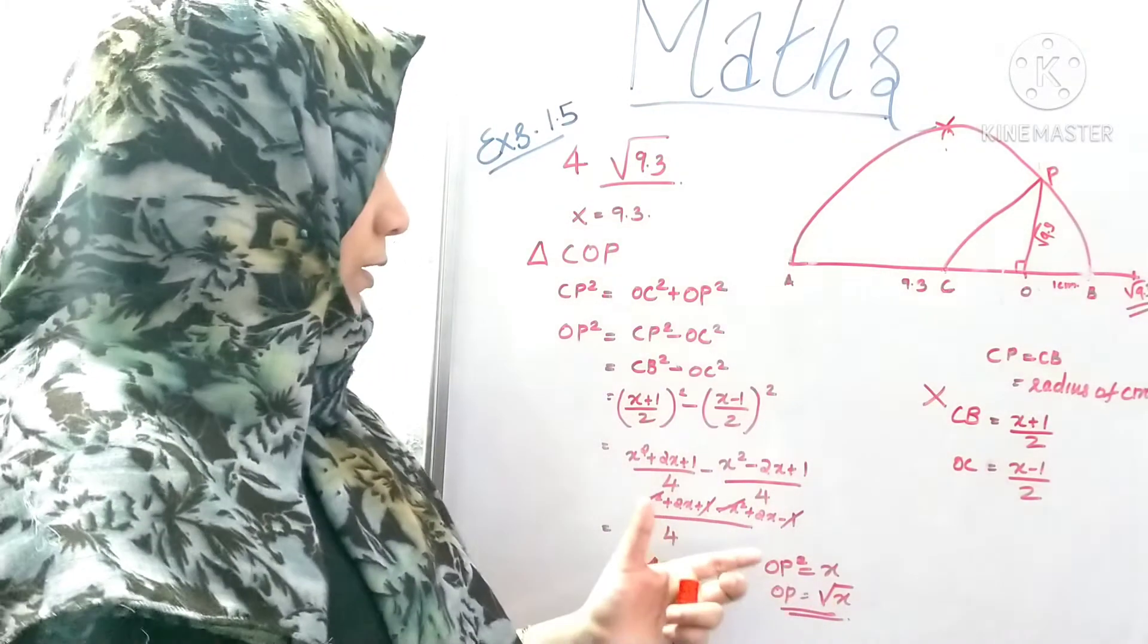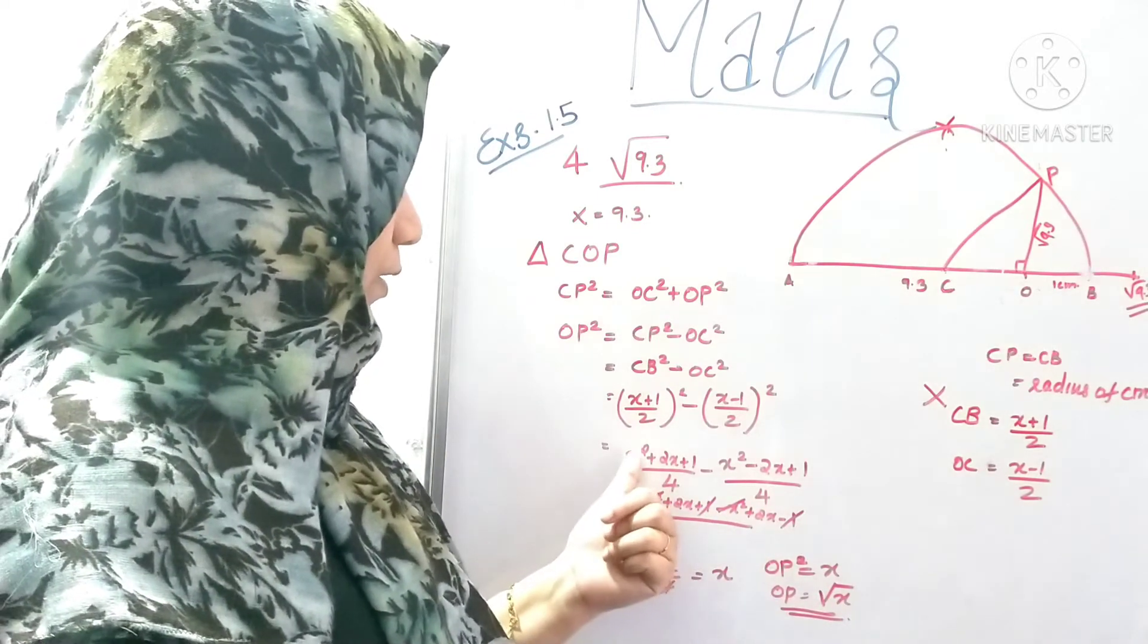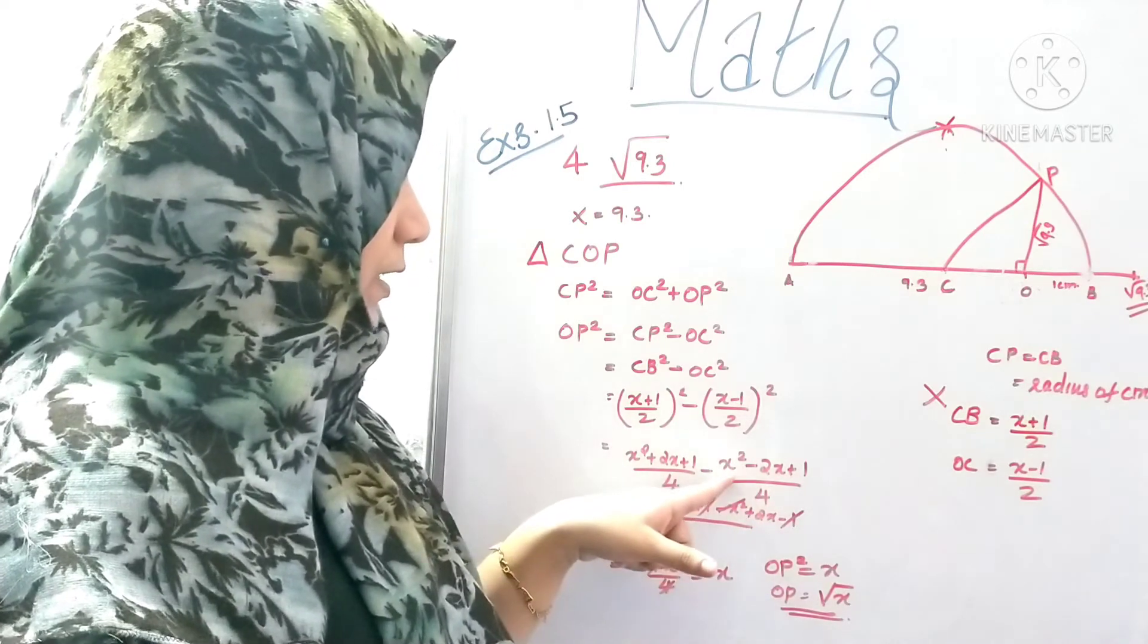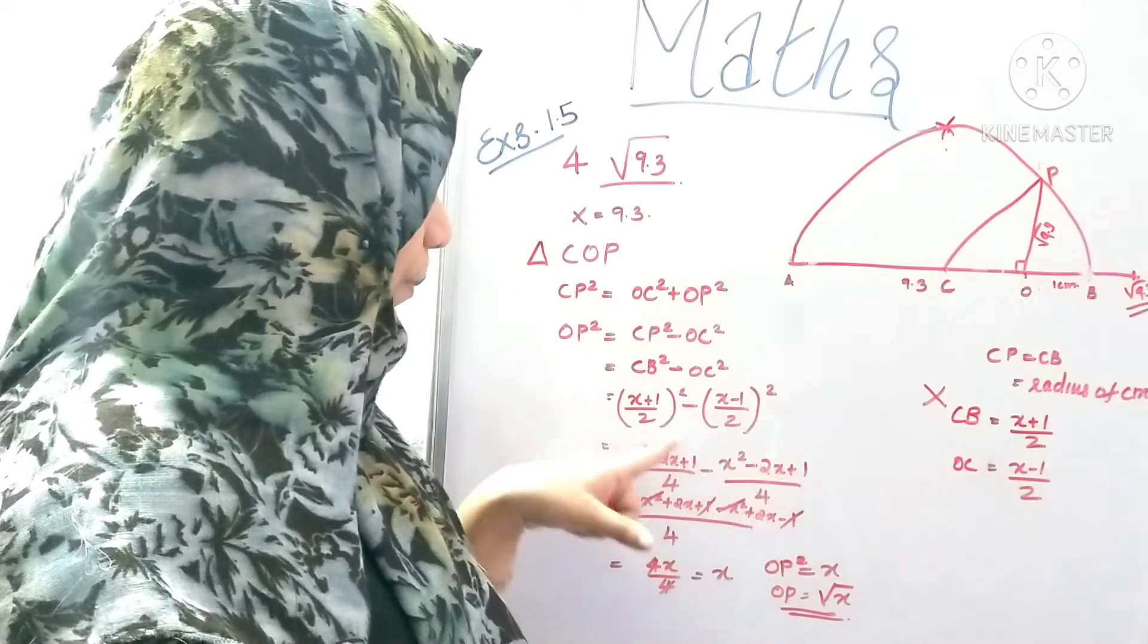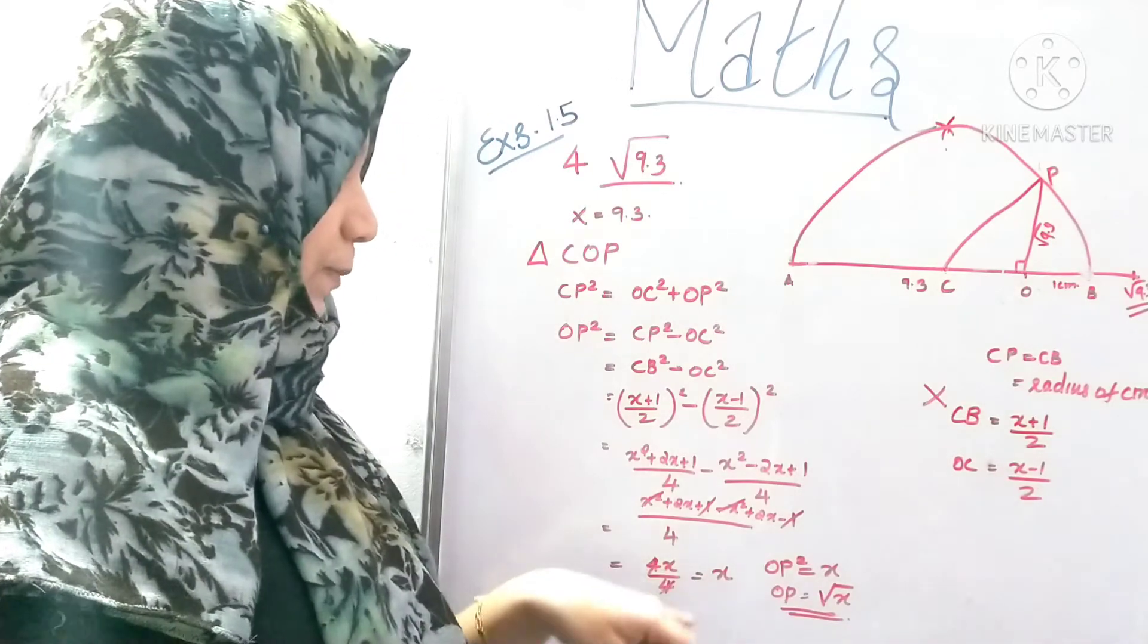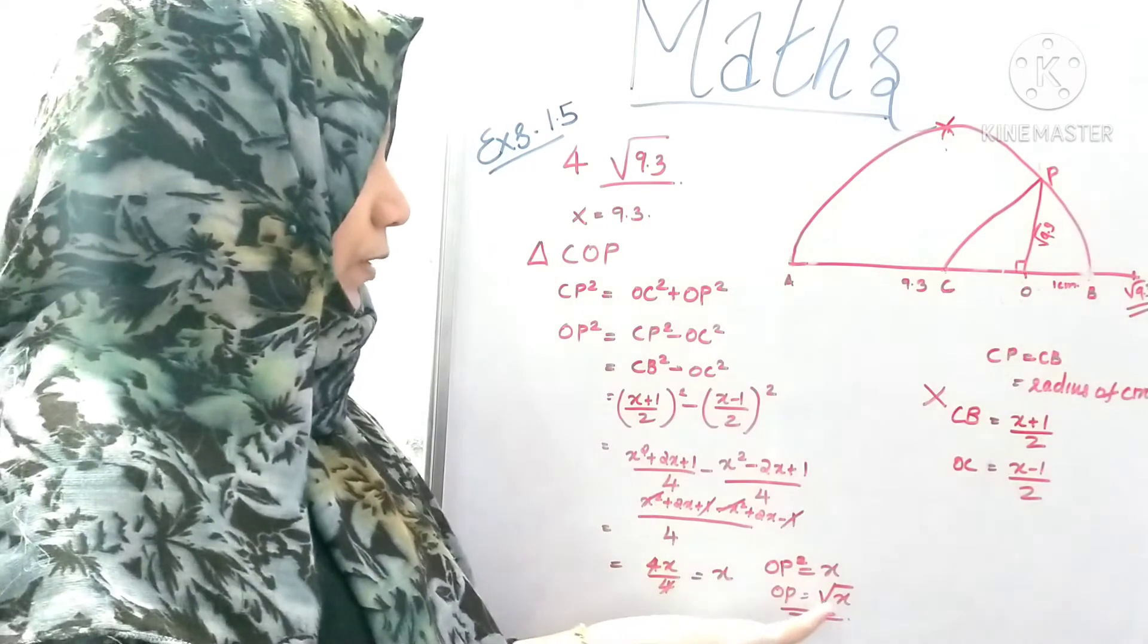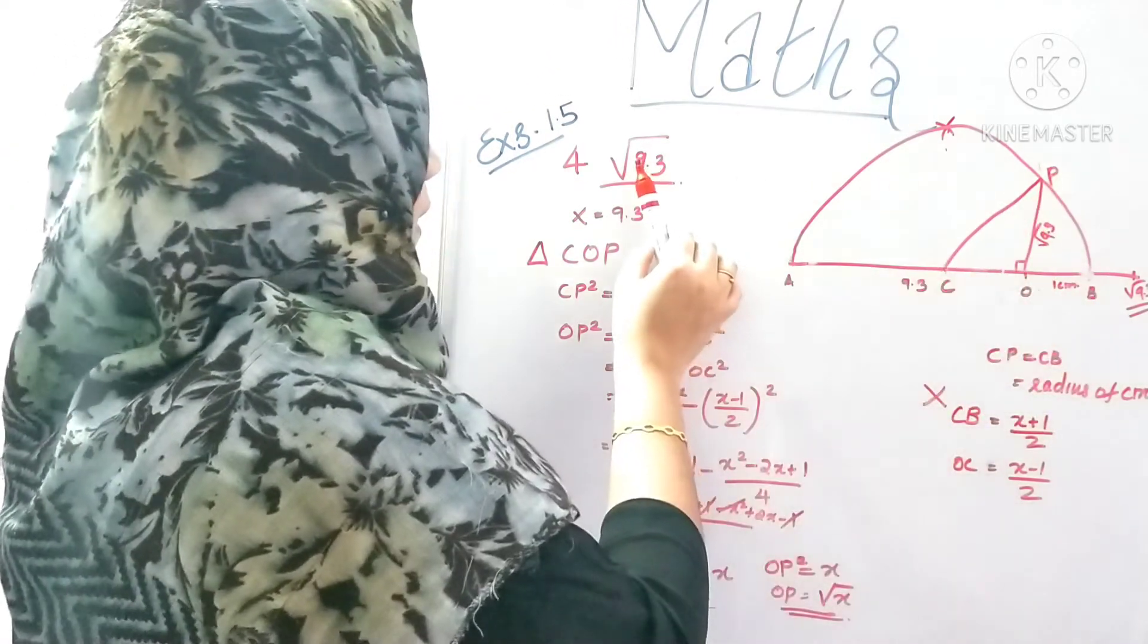We have LCM. If you have 4, you can cancel 4. x squared plus 2x plus 1 minus x squared minus 1 plus 2x plus 1. Then we have 2x plus 2x, that is 4x. 4x divided by 4, 4 and 4 cancel out, x. Then OP squared is x. Then OP is root x. X is 9.3, then OP is root 9.3.